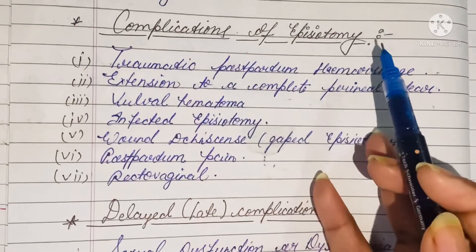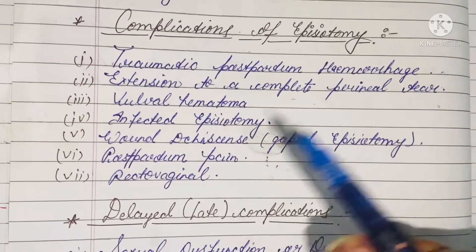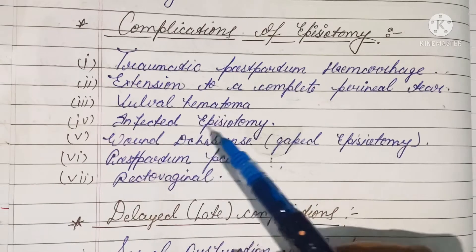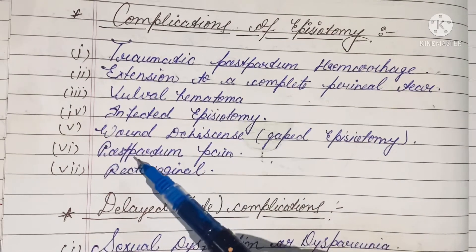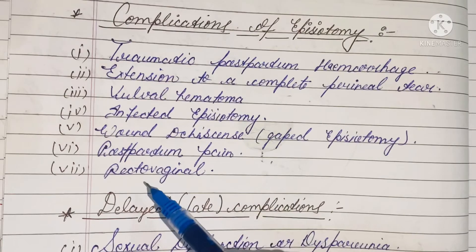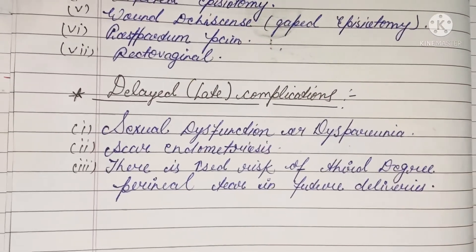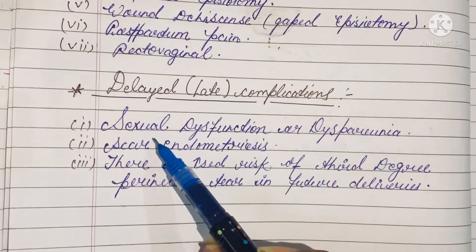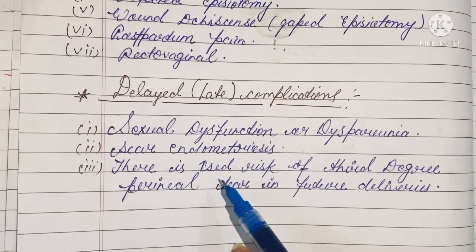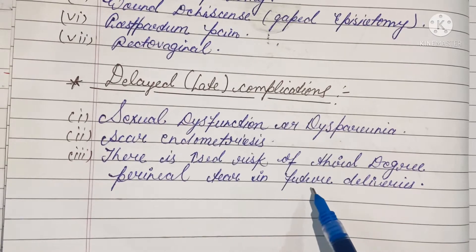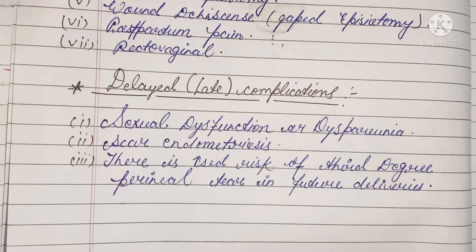Moving to the complications of episiotomy: traumatic postpartum hemorrhage, extension to a complete perineal tear, vulval hematoma, infected episiotomy, wound dehiscence or gaped episiotomy, postpartum pain, and rectovaginal fistula. There are also delayed complications: sexual dysfunction or dyspareunia, scar and neuroma, and increased risk of third degree perineal tear in future deliveries, which can be risky for future deliveries as well.